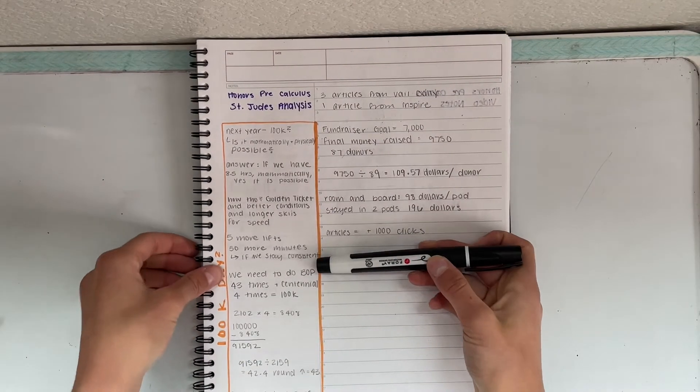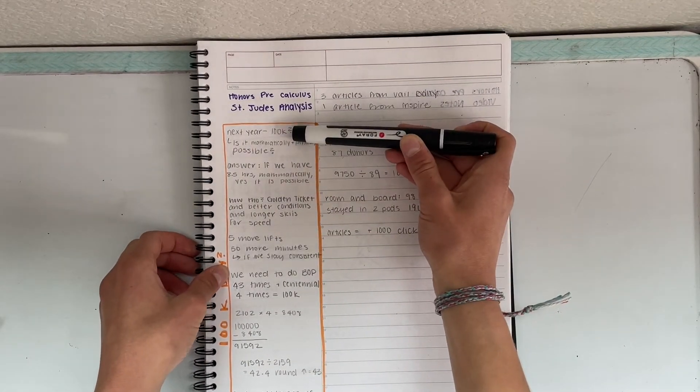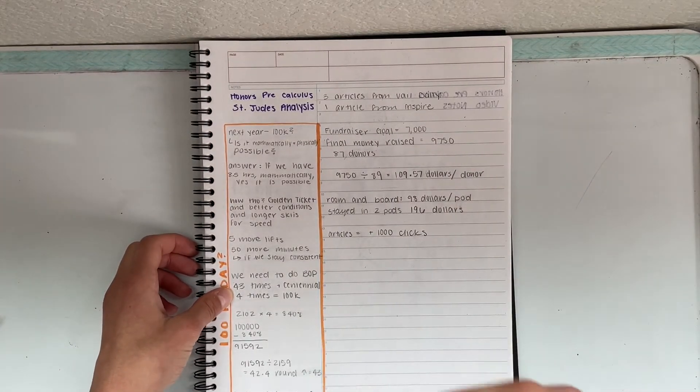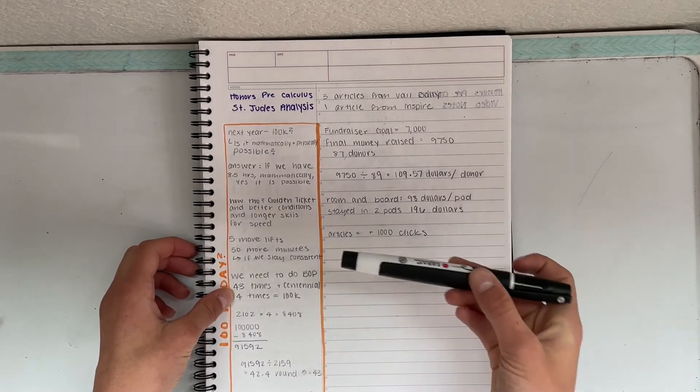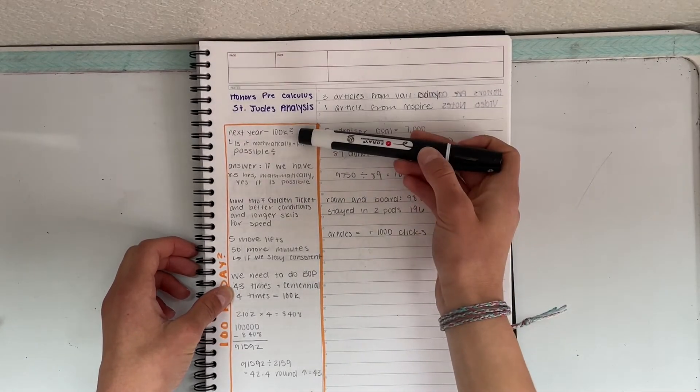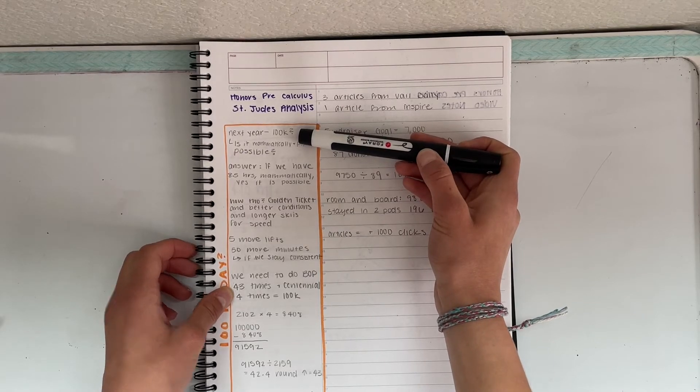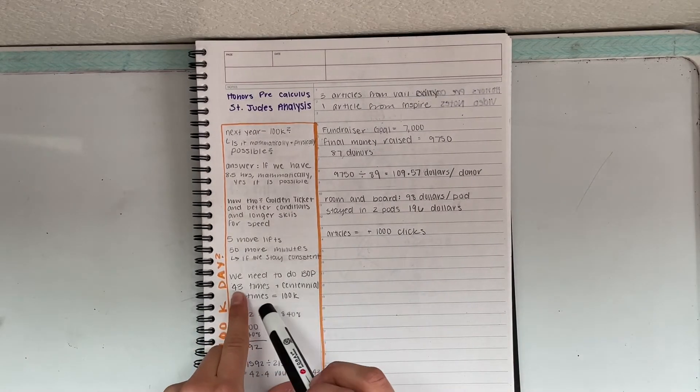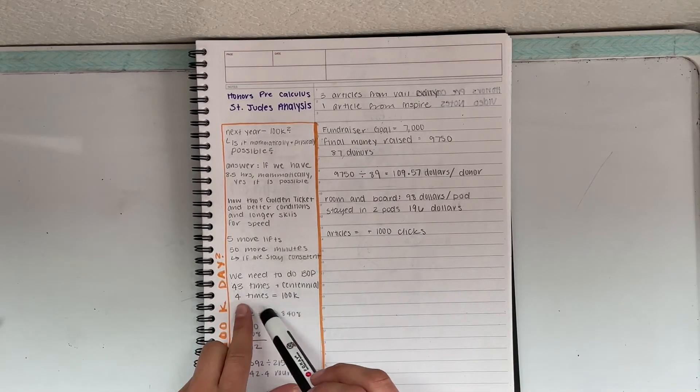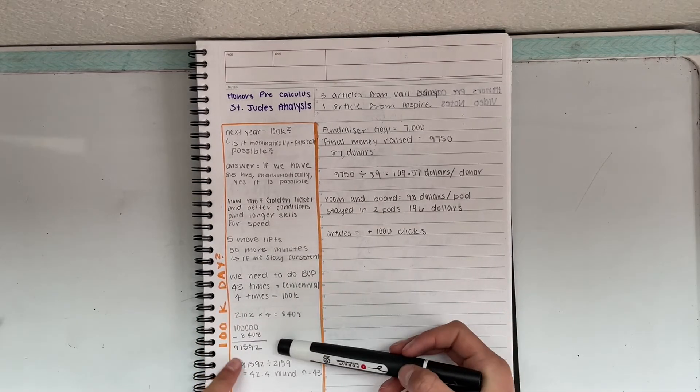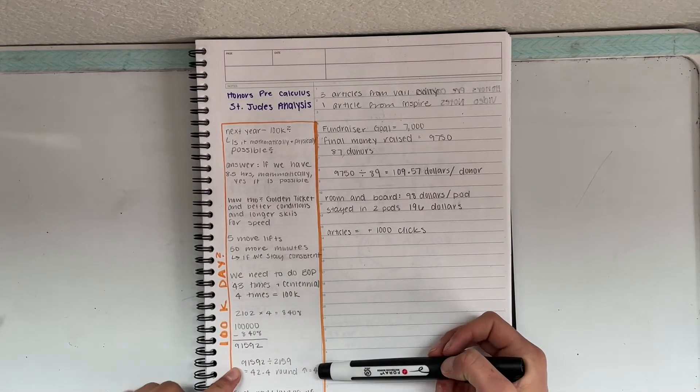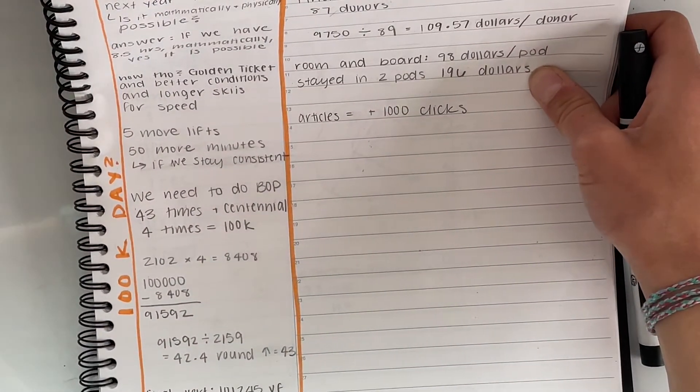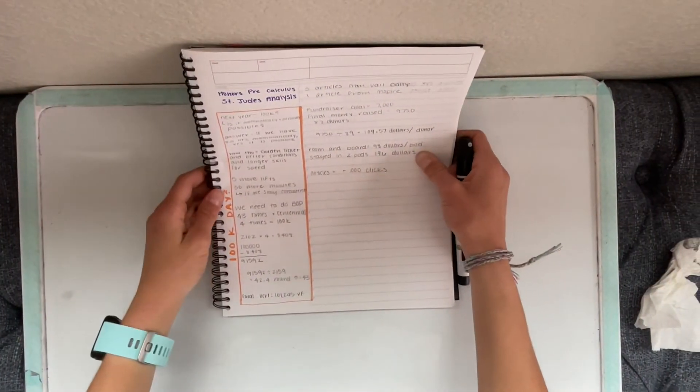So what you do is I divided, well, I first multiplied Centennial lift, which is 2,102 times four. And then I subtracted that total from 100,000, then divided that by 2,159, which is the Birds of Prey. And that means that we have to ride Birds of Prey 43 times and Centennial four times, which equals a hundred thousand. So here's my math right here. That's basically exactly what I did. And then my, our final vertical feet would actually be 101,245, but that seems actually pretty crazy.